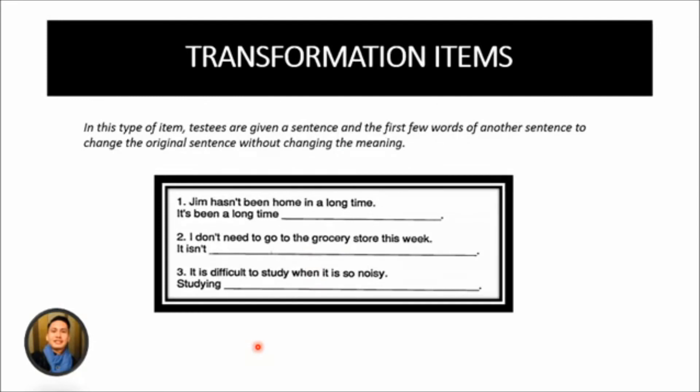Another type of grammar item makes use of transformations. In this type of item, testees are given a sentence and the first few words of another sentence to change the original sentence without changing the meaning. For example, here, this is how you do a transformation item. This type of test is difficult to grade because the teacher has to be aware of the variety of possible answers. Another problem is that it does not in any way test the testees' knowledge of when each of the possible transformations would be most appropriate.